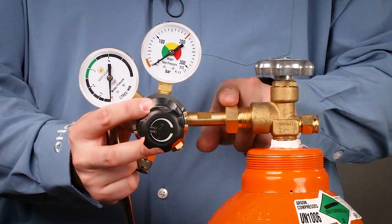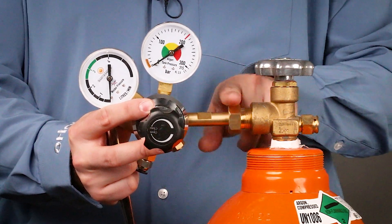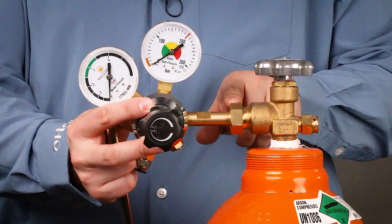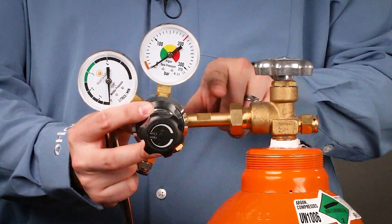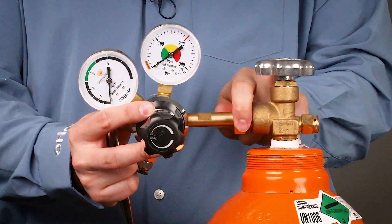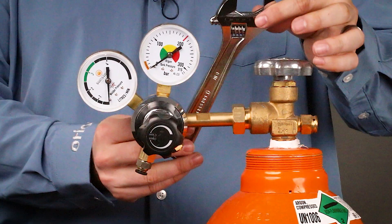Then I'm going to thread this on by hand almost all the way. If it's hard or binding, make sure we're in line properly. There will be a point where it just stops spinning—that's when we introduce our wrench.